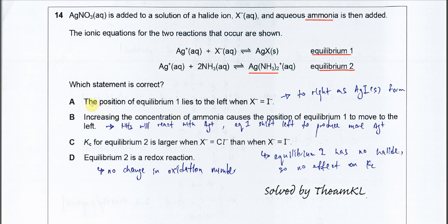For option A, the position of equilibrium one lies to the left when X⁻ is iodide. This is clearly wrong because when iodide is added, the silver ion will react with the iodide to form silver iodide. Therefore, the equilibrium will shift to the right, not to the left.